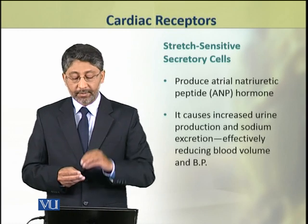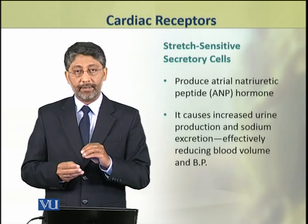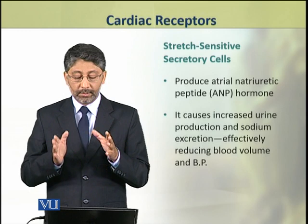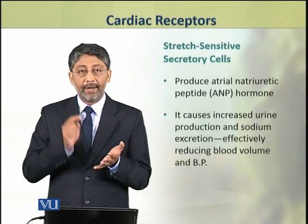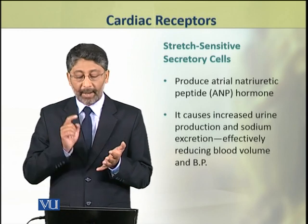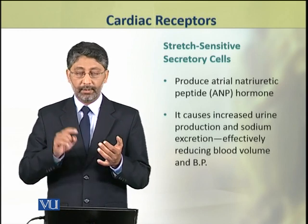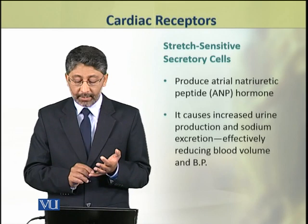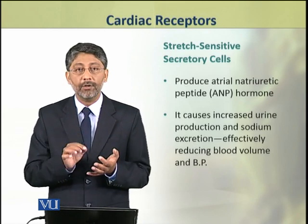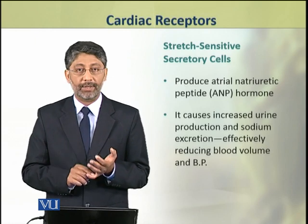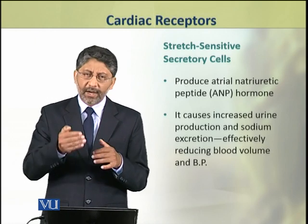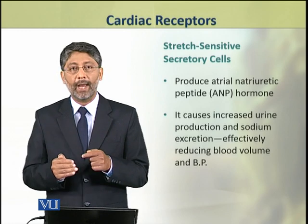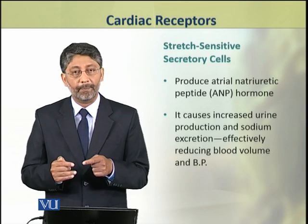The stretch sensitive secretory cells in the atrial wall produce atrial natriuretic peptide hormone. This hormone causes an increase in urine production and sodium excretion, which effectively reduces blood volume and blood pressure.